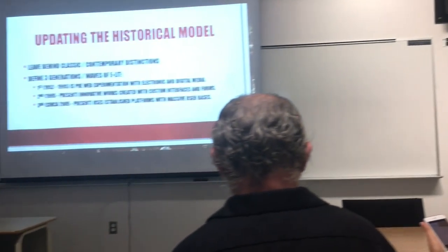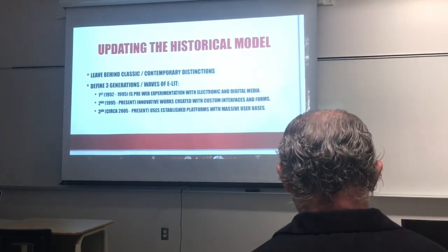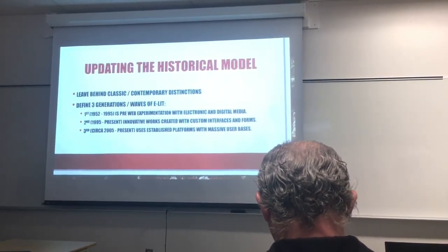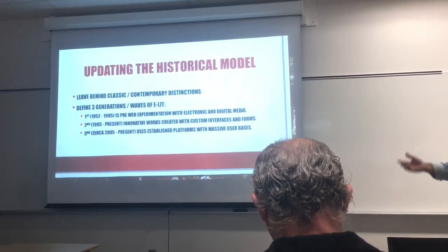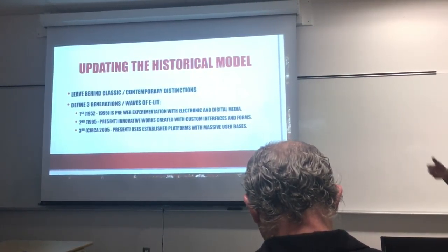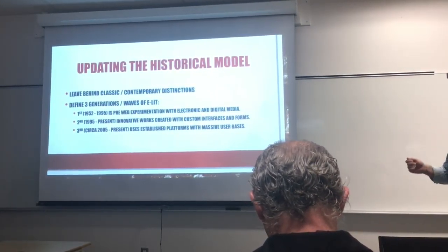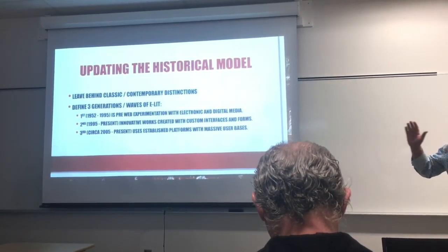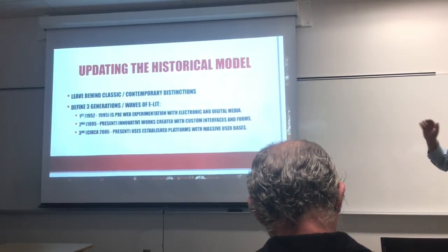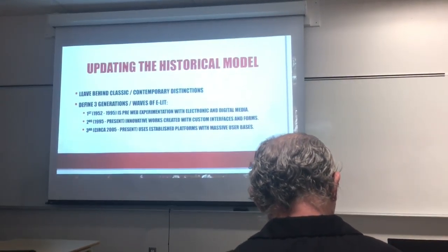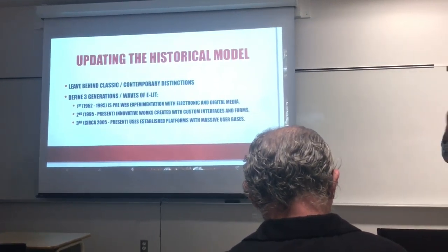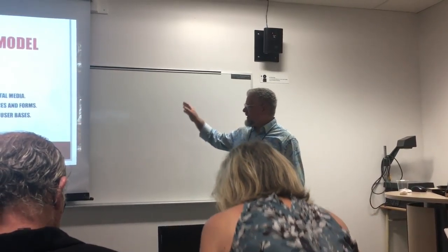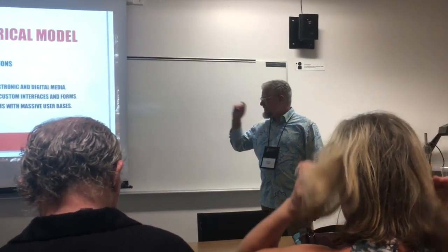So here's what I'm proposing: updating the historical model. Leaving behind classic and contemporary distinctions. The problem with 'contemporary' is it's open-ended — what's post-contemporary? You have to keep adapting it. And I'm defining three generations, or waves, of electronic literature. The first one, much as defined by my predecessors, is pre-web experimentation with electronic and digital media.